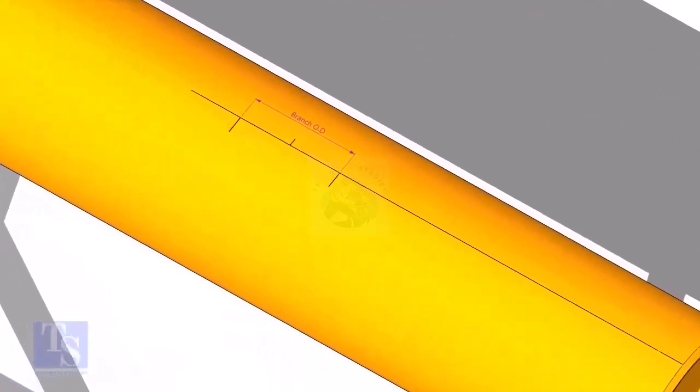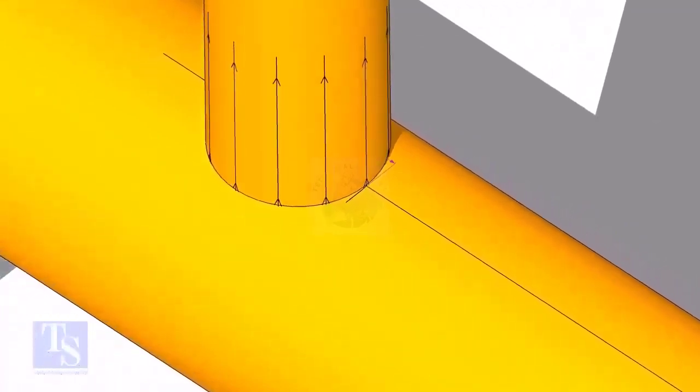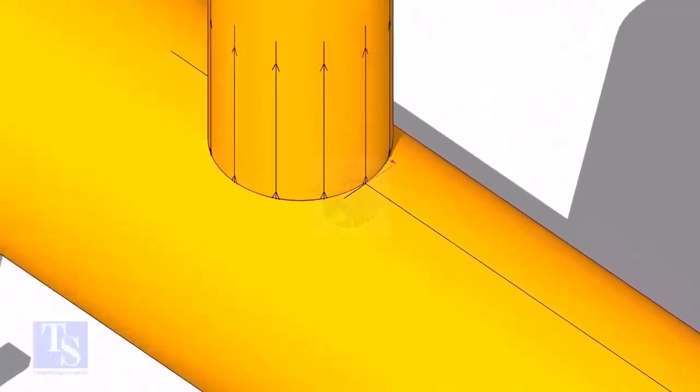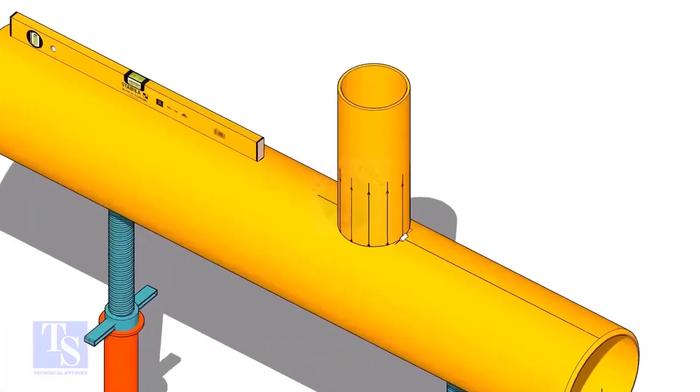Mark the branch OD on the center line of the header. Put the branch exactly on this marking, matching the branch center line. Tack weld the branch on the header just to stand it vertically.